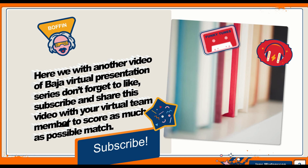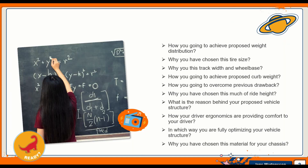1. How are you going to achieve the proposed weight distribution? 2. Why have you chosen this tire size? 3. Why did you choose this track width and wheelbase? 4. How are you going to achieve the proposed curb weight?